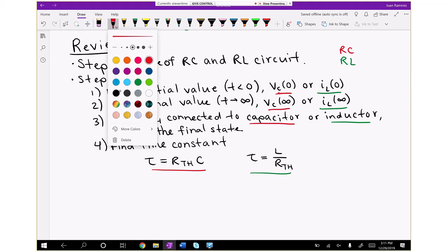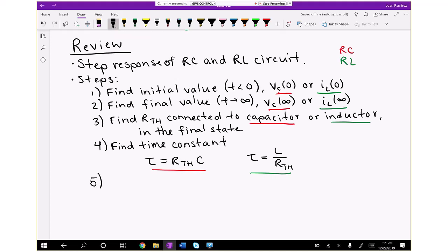Once you have all this information, you can plug it into the general equation, which we call the complete response of a first order circuit. Instead of saying voltage or current, I'm going to say x, where x could be capacitor voltage or inductor current. So you have x(t) equals the final value plus the initial value minus the final value times e to the negative t over tau, and that's for times greater than or equal to zero.